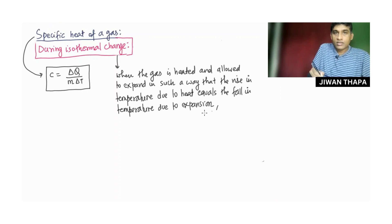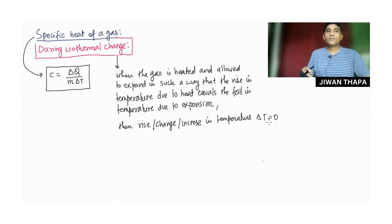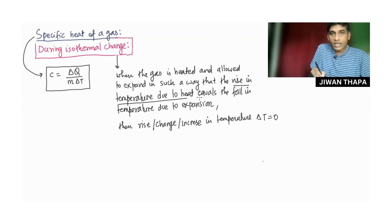Then the rise or change in temperature delta T equals zero, because we have mentioned rise in temperature due to heat equals the fall in temperature due to expansion. There is no rise or increase or change in temperature, so for that reason delta T equals zero.